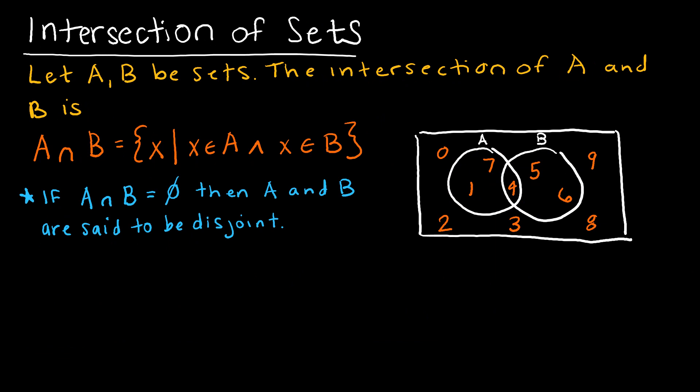So the intersection of sets, if the union was sort of like an or, this is sort of like an and. And I'm saying the only way that it belongs in the intersection is if it's in set A and B. So here I'm saying A intersect B is the set of all X's such that X is in A and X is in B.